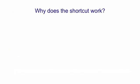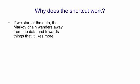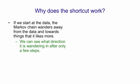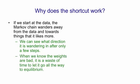So the obvious question is, why does that shortcut work at all? And here's the reasoning. If we start the chain at the data, the Markov chain will wander away from the data and towards its equilibrium distribution. That is, towards things that its initial weights like more than the data. We can see what direction it's wandering in after only a few steps. And if we know the initial weights aren't very good, it's a waste of time to go all the way to equilibrium. We know how to change them to stop it wandering away from the data without going all the way to equilibrium.